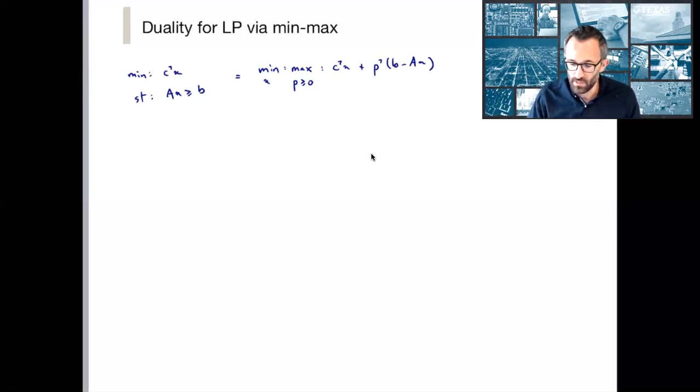Again, because maximization, the inner optimizer has the power, this is better for the maximizer than if the maximizer has to go first. So it's greater than or equal to maximizing over p, minimizing over x. I'm going to collect the terms here a little bit differently and just write it as p^T b + (c^T - p^T A) times x.